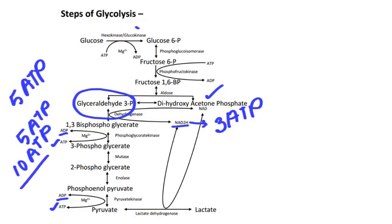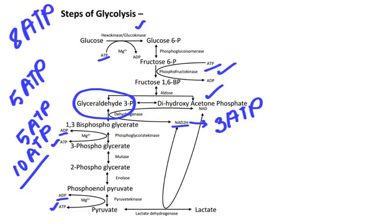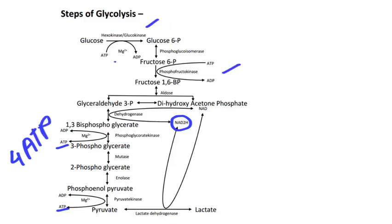But in the first and third steps, 2 ATP is used. So the net ATP production is 8 ATP in aerobic glycolysis. On the other hand, in anaerobic glycolysis, the NADH is used, so only 4 ATP is produced. In the first and third steps, 2 ATP is used, so the net ATP production in anaerobic glycolysis is 2 ATP.